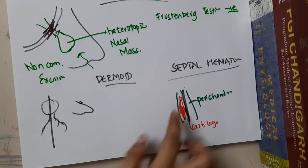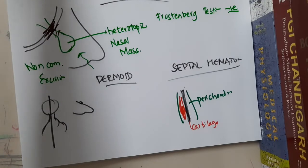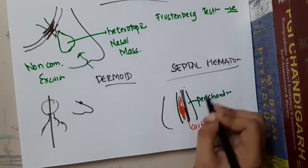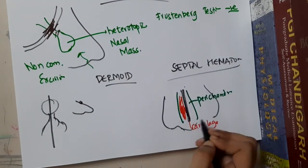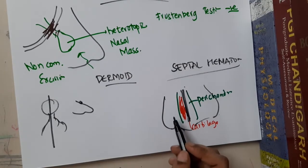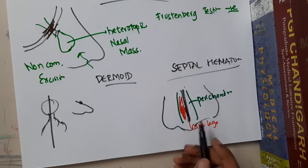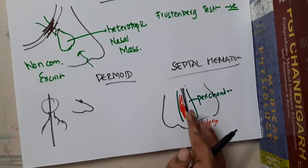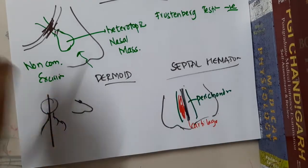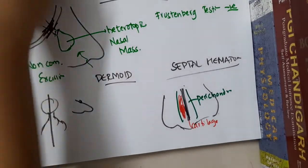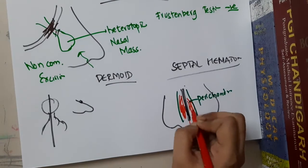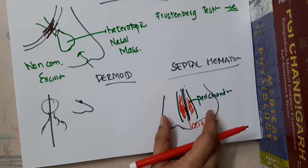When there is a septal hematoma in the nose, it will cause nasal obstruction, giving the patient difficulty in breathing. It is most commonly bilateral, and you will see bilateral cystic swelling that is soft, fluctuant, smooth, and round.